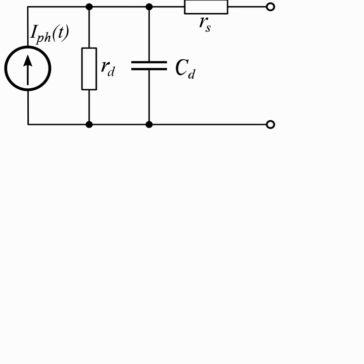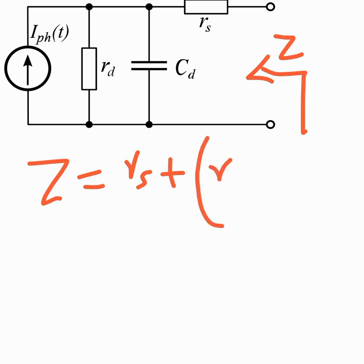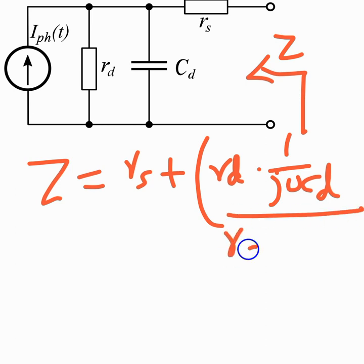And it is equal to R_s plus a parallel combination of R_d into 1 over j omega C_d divided by R_d plus 1 over j omega C_d. So this is how you can compute or calculate impedance of this network, the photodiode circuit.